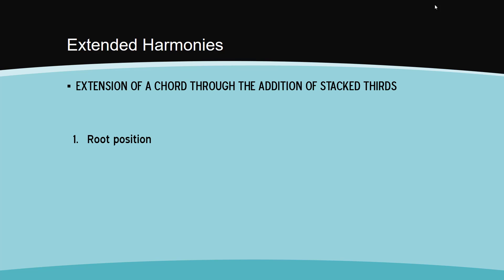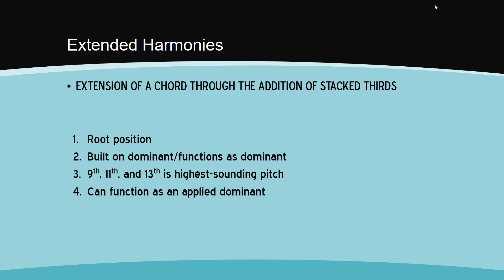They are almost always in root position, because they lose their identity when they are inverted. They are mostly dominant harmonies. Again, just because the dominant is extended does not mean that it loses its function as a dominant. The 9th, 11th, or 13th is almost always the highest-sounding pitch. When this is not the case, the chord loses its identity, and the extended harmony ends up sounding like a non-harmonic tone. Extended dominants can not only function as the dominant harmony within the primary key, but they can also function as an applied dominant harmony to another scale degree. Finally, extended harmonies occur in both major and minor modes.